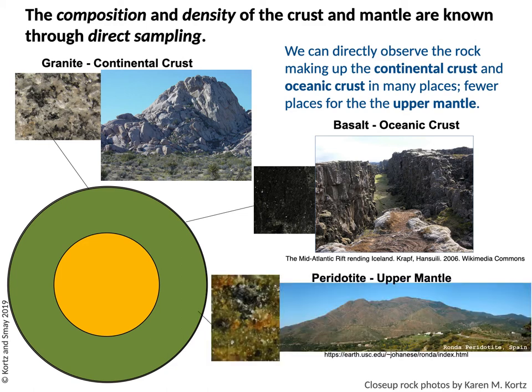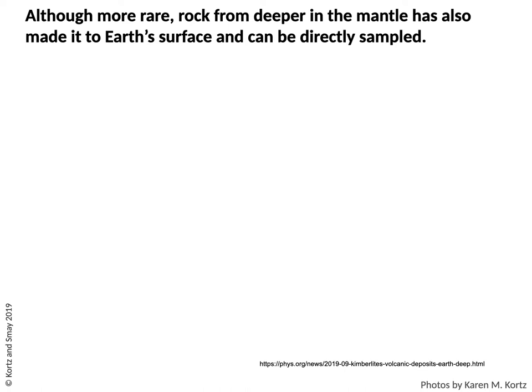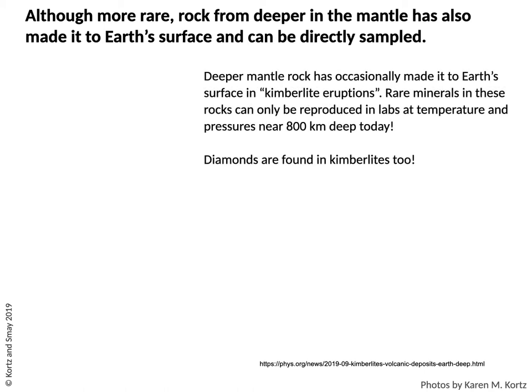A few places, you can actually see the remnants of what was the upper mantle, made up of a rock that is usually green and black colored called peridotite. Usually this is not being uplifted to earth's surface today, but in the past this has occurred, and then weathering occurred and kind of stripped off the overhead rock layers. This can be observed — this example is in Spain. Although these deposits are really rare, occasionally we find areas where material from the lower mantle has even made it to earth's surface, and we can go and sample these.